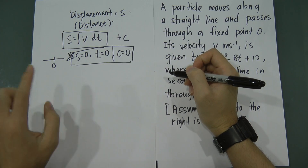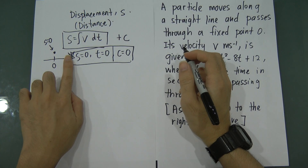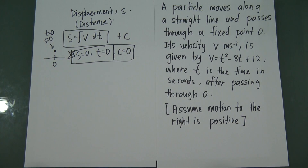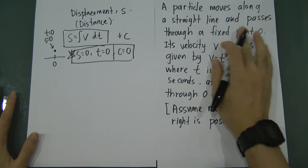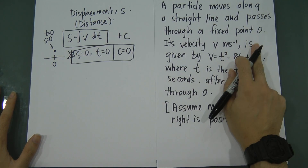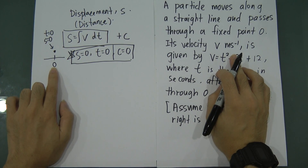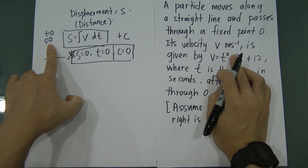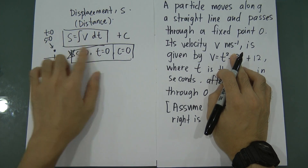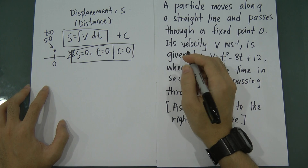This is almost certain for SPM syllabus. For STPM, IGCSE or A-level, c is not necessarily zero, but for SPM, about 95% of the time you will get c equal to zero. If a particle is located at the origin, then s equals zero. Most of the time t will equal zero because they haven't started calculating time yet.